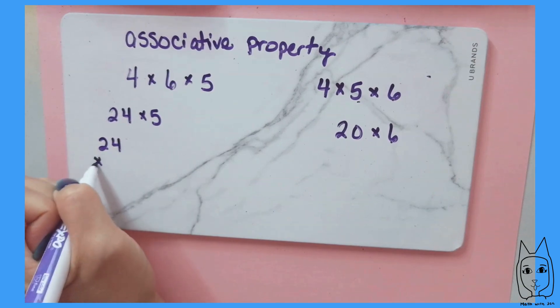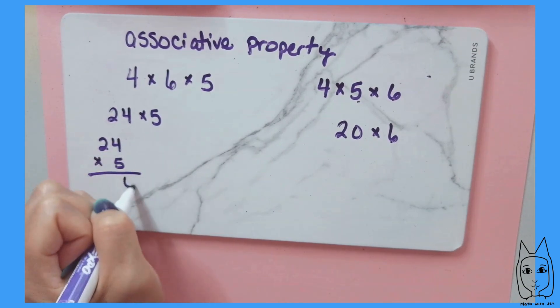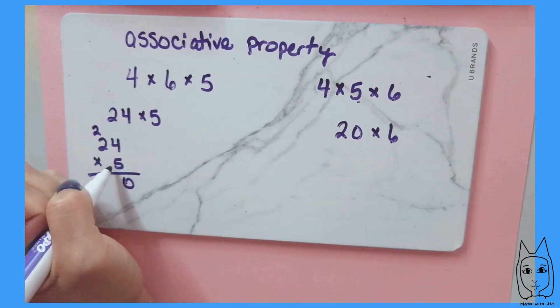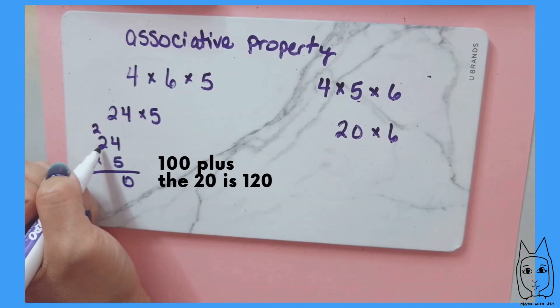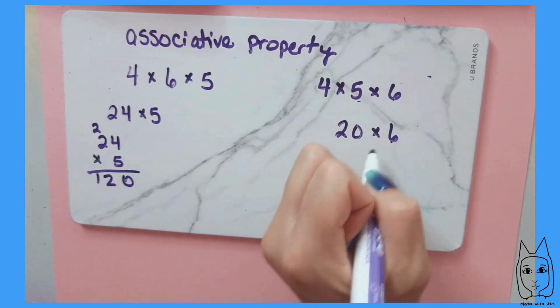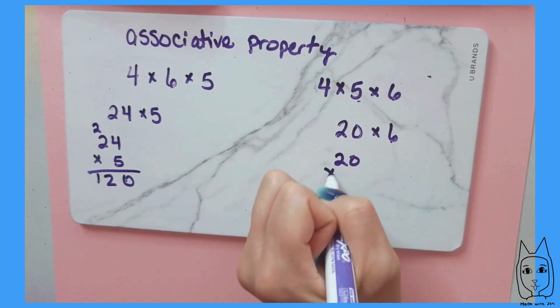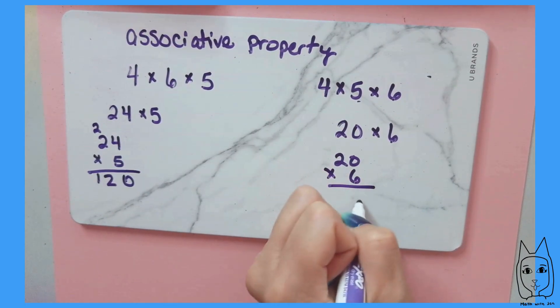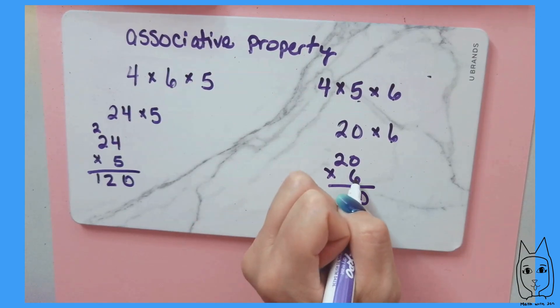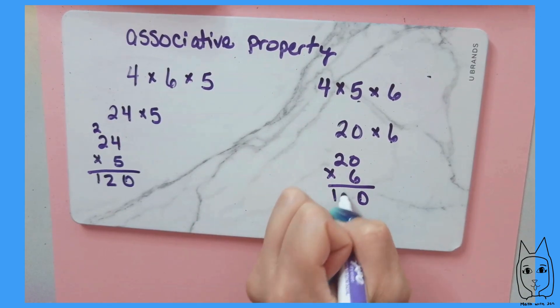Over here I multiply these two together: 24 times 5. 5 times 4 is 20, carry the 2. 5 times 2 is 10, plus the 2 is 12. That's 120. If I come over here, 20 times 6: 6 times 0 is 0, 6 times 2 is 12. That's 120.